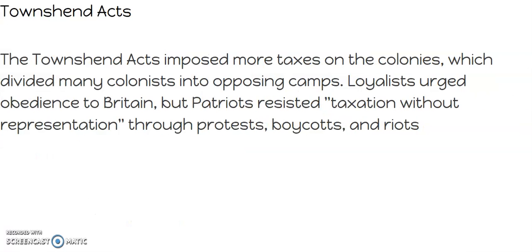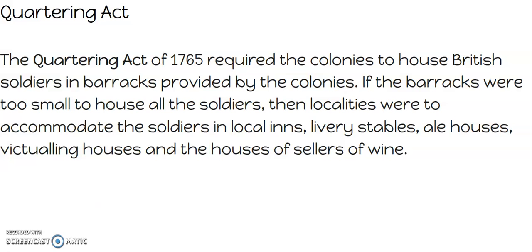Then came the Townshend Acts. Townshend was a Parliament member who really wanted to punish the colonists and put them in their place, so they imposed more taxes on the colonies, which divided many colonists into opposing camps. The loyalists urged obedience to Great Britain, but the Patriots resisted taxation without representation through protests, boycotts, and riots. The Quartering Act required the colonies to house British soldiers in barracks provided by the colonies. If the barracks were too small, local localities had to accommodate the soldiers in inns, stables, bars, restaurants, and the houses of sellers of wine. People did not like being told they had to house a complete stranger.